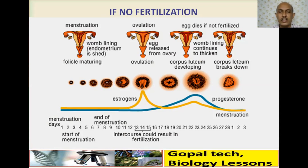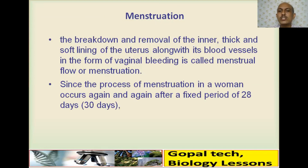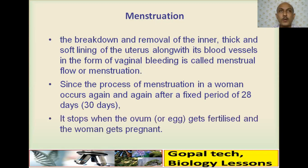Menstruation is the breakdown and removal of the inner endometrium — the thick and soft lining of the uterus along with its blood vessels — in the form of vaginal bleeding, called menstrual flow. Since menstruation occurs again and again after a fixed period of 28–30 days, it is called the monthly cycle. It stops when the egg gets fertilized and the woman becomes pregnant.